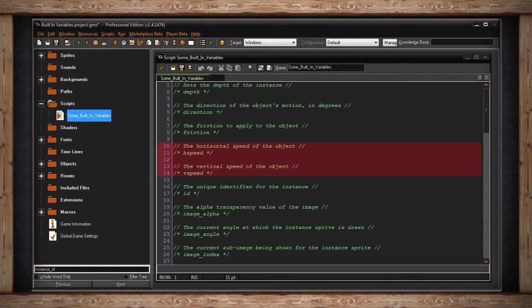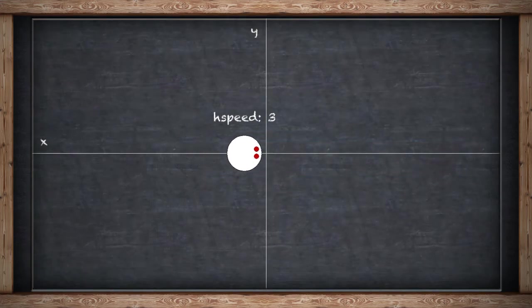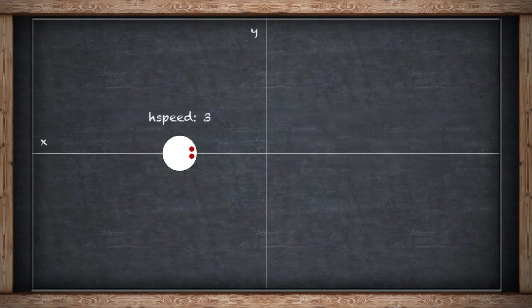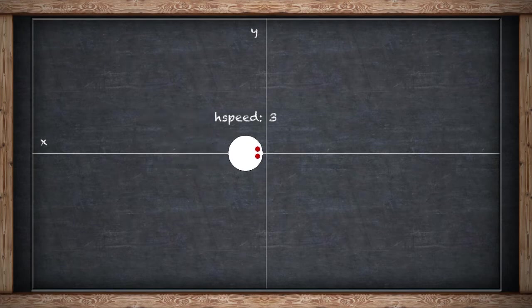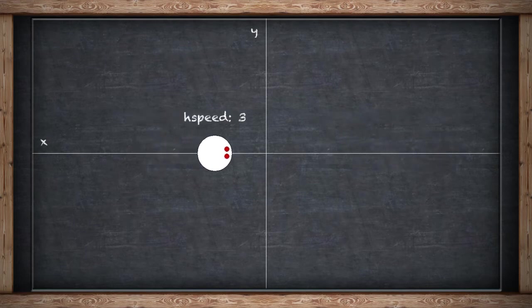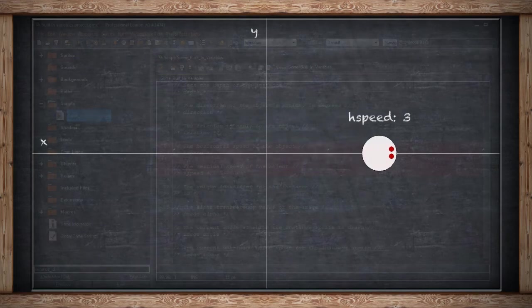HSpeed and vSpeed set the horizontal speed and vertical speed of an instance. Horizontal speed affects the x-axis: a positive number moves to the right and a negative number moves to the left. For vSpeed, a negative number moves up on your screen and a positive number moves down. For example, an instance with an hSpeed of positive 3 will move 3 pixels per step to the right. These values are both read and write.